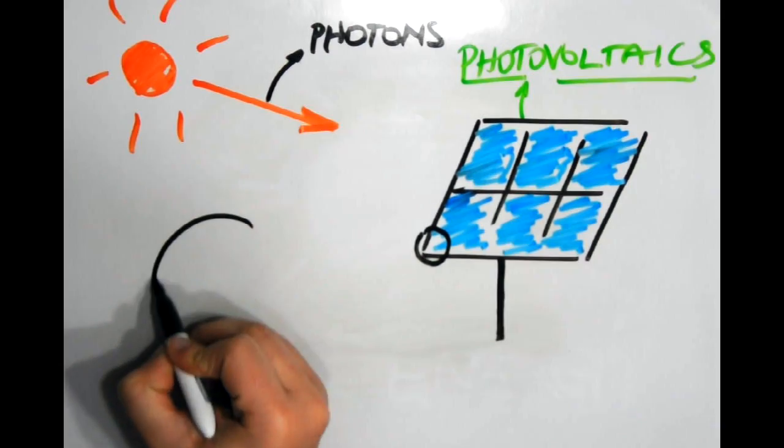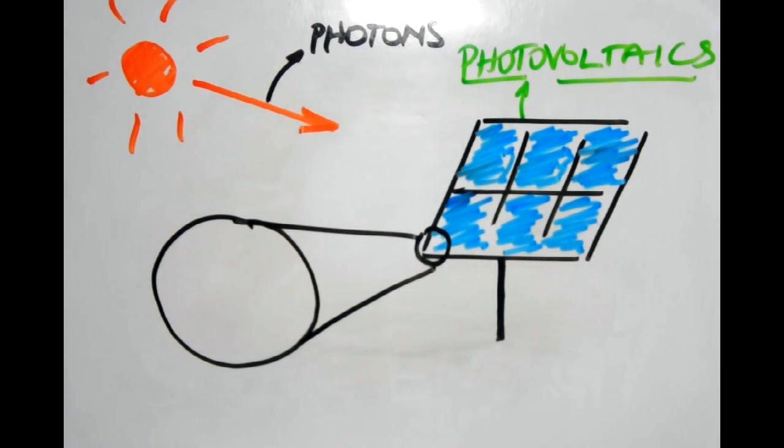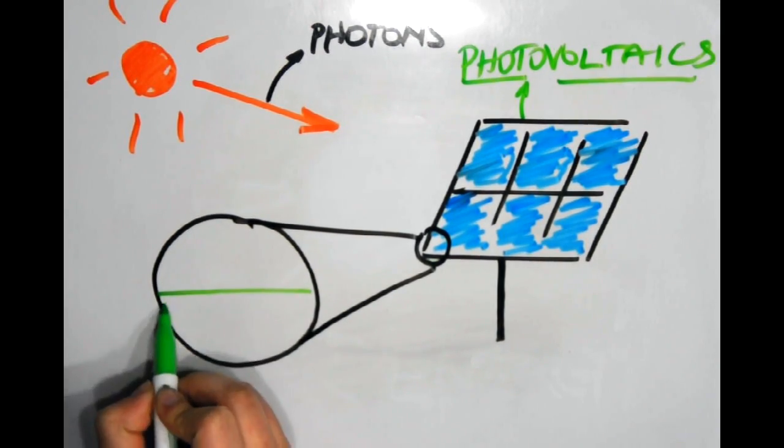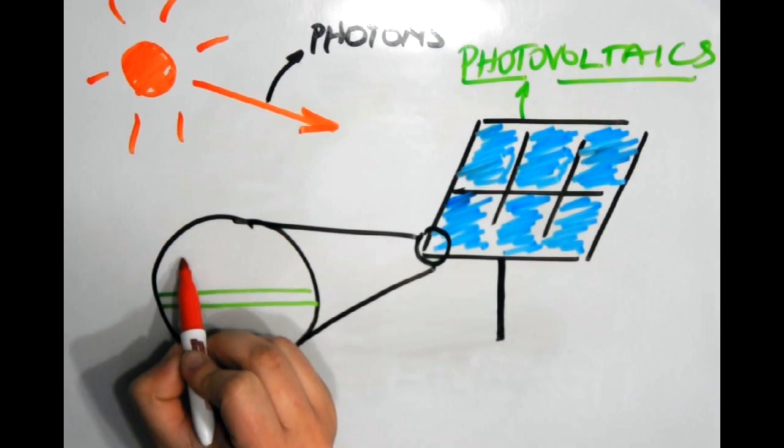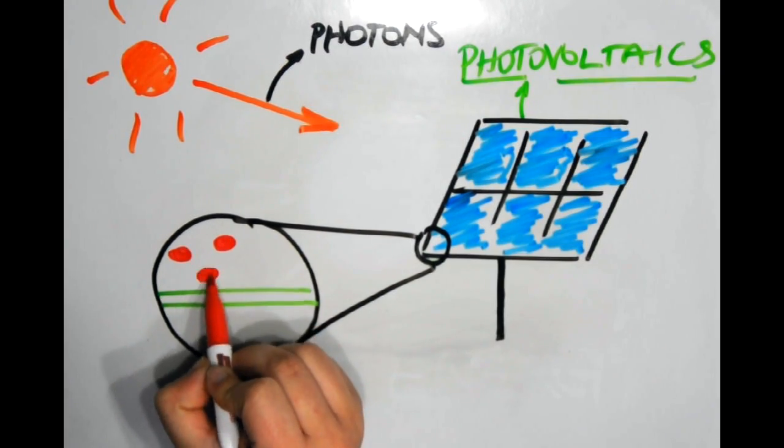However, that is only half the work. Now it needs to herd these free electrons into an electric current. This is done by creating an electrical imbalance within the cell. By using other elements with silicon, two types of silicon are created—one with a spare electron and one with missing electrons.